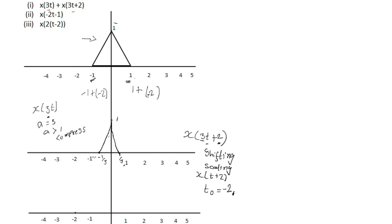Our next signal will range from those new limits, thereby shifting the signal. The upper limit becomes minus 1 and the lower limit becomes minus 3. So our shifted signal ranges from minus 3 to minus 1 with the same amplitude.